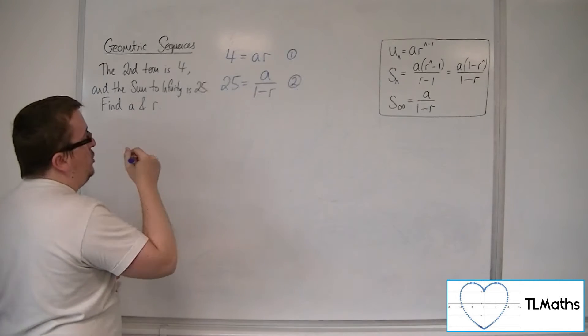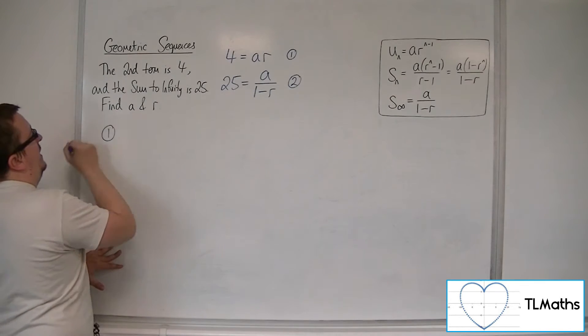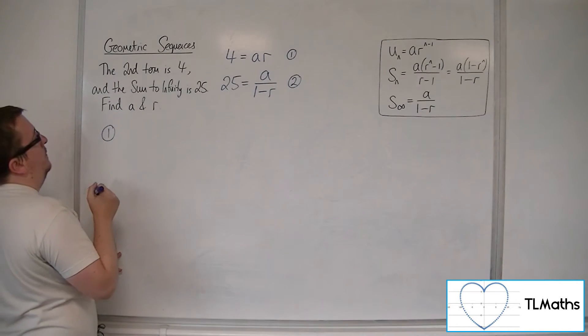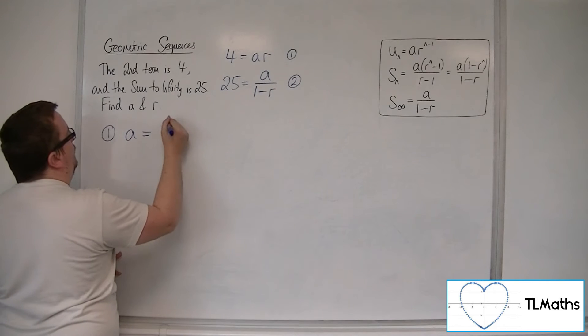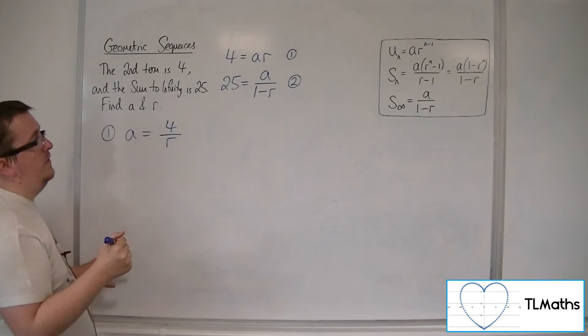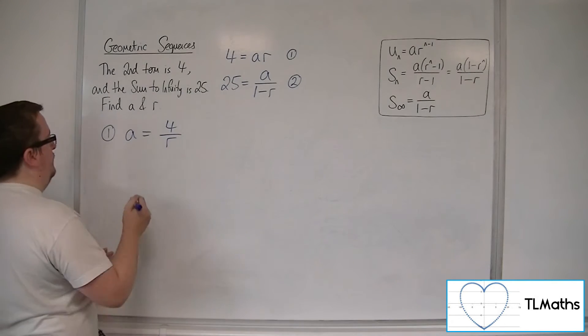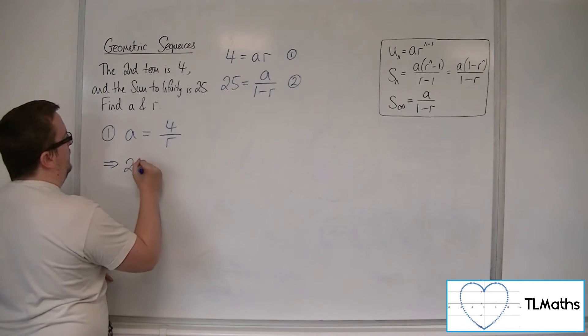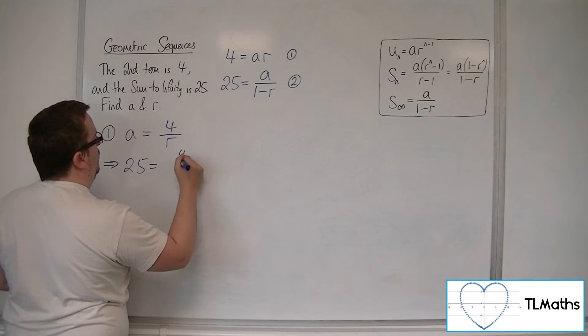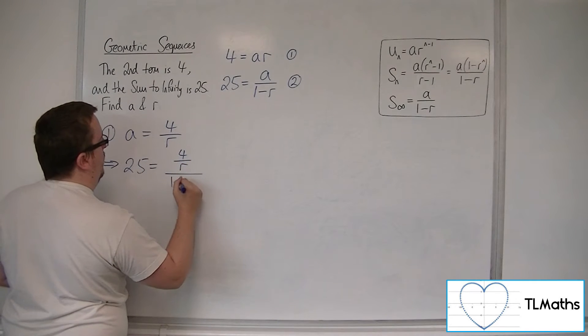So if I rearrange equation number 1 to get a in terms of r, then a is equal to 4 over r. And then I can substitute that into equation number 2. So 25 is equal to 4 over r over 1 minus r.